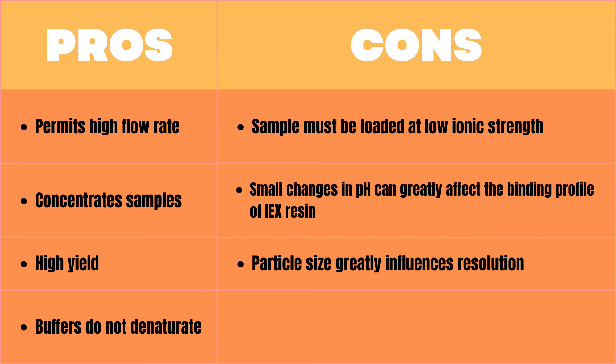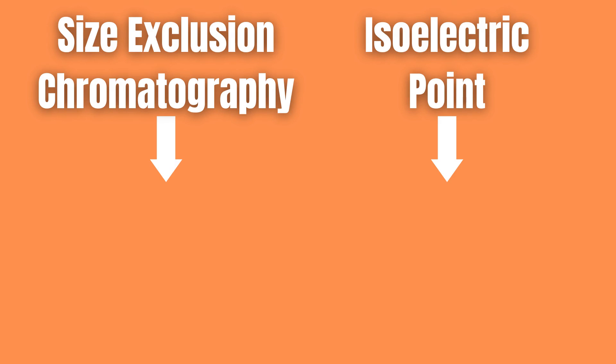But maybe you do not want to separate your proteins based on charge but based on size instead. Well then you need to check out this video where I discuss size exclusion chromatography. As promised you can also click the video where I explain the isoelectric point displayed on the screen right now.